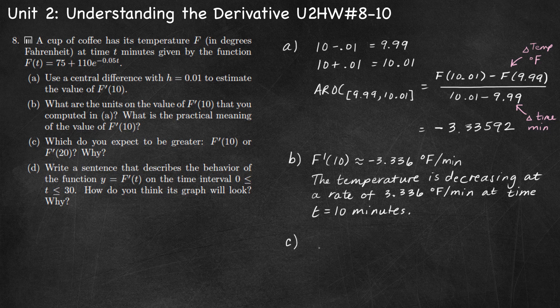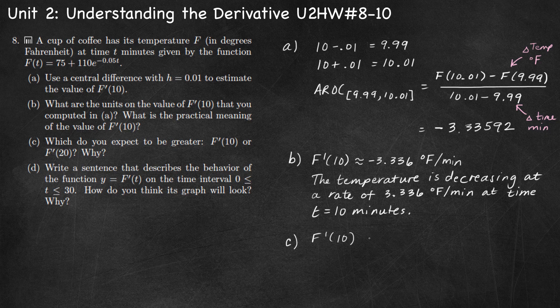Part C: which do you expect to be greater, f prime of 10 or f prime of 20? F prime of 10 measures how quickly the temperature is changing at that time, and f prime of 20 measures how quickly the temperature is changing at t equals 20. As time goes on, the coffee is still cooling, but it's dropping by a smaller and smaller amount — it cools quickly at the beginning and more slowly as time goes by. Since we're dealing with negative numbers, a rate getting smaller means it's approaching zero. Negative numbers approaching zero are actually getting larger on the number line. So f prime of 10 is less than f prime of 20, because the temperature is decreasing at a decreasing rate.